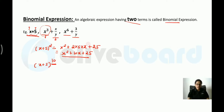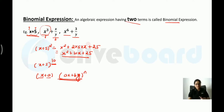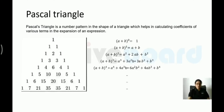The binomial theorem gives a generalized expression for (x + a) to the power n, where x and a can be any terms. Before we start, let me explain Pascal's triangle. We'll look at the expansion of (a + b) to the power 0, which is 1, then power 1, power 2, and so on.